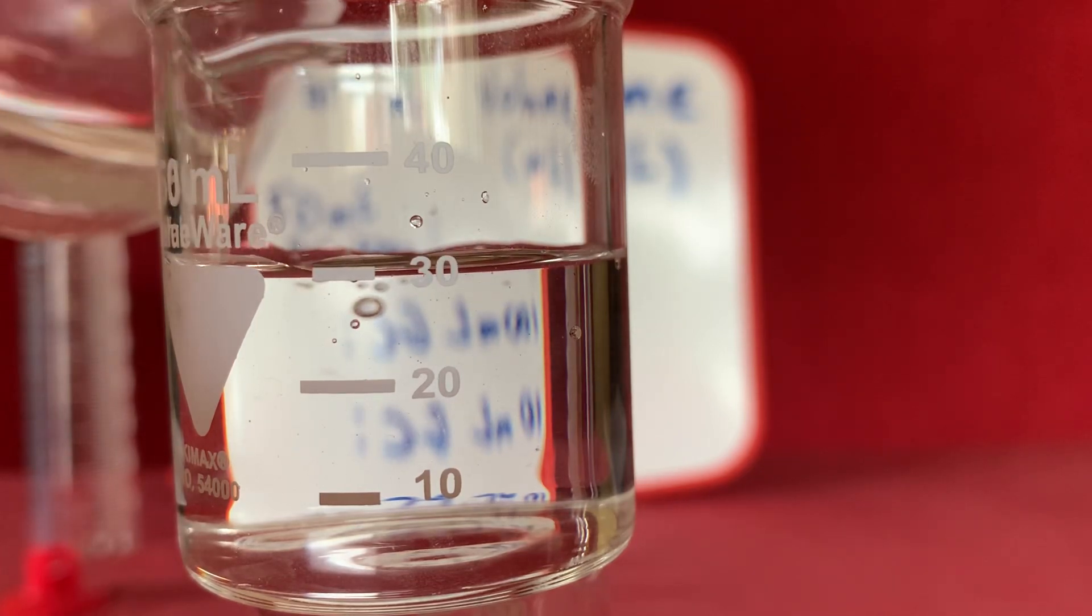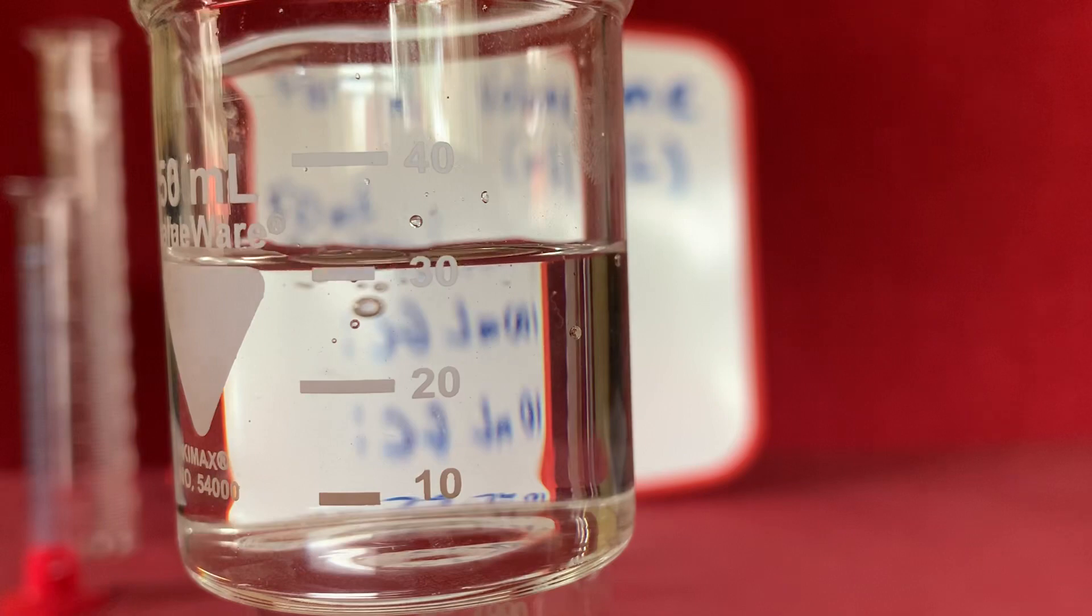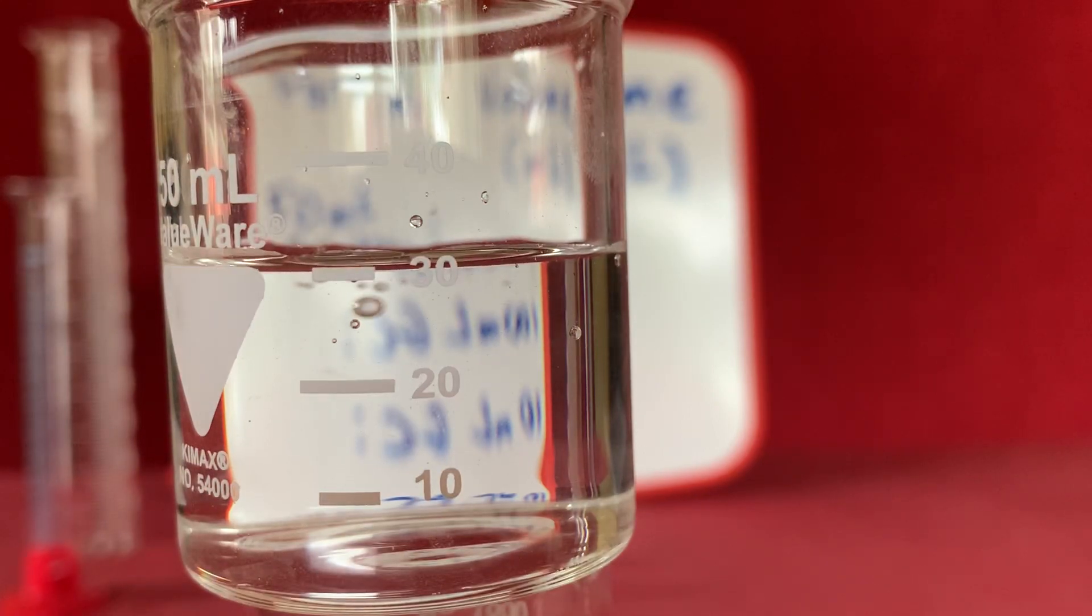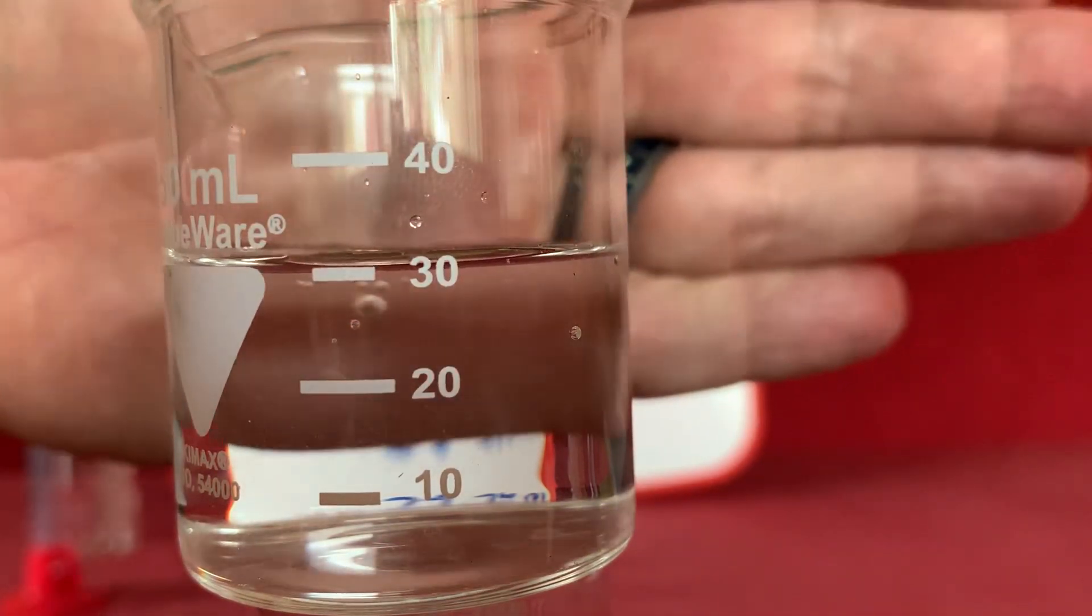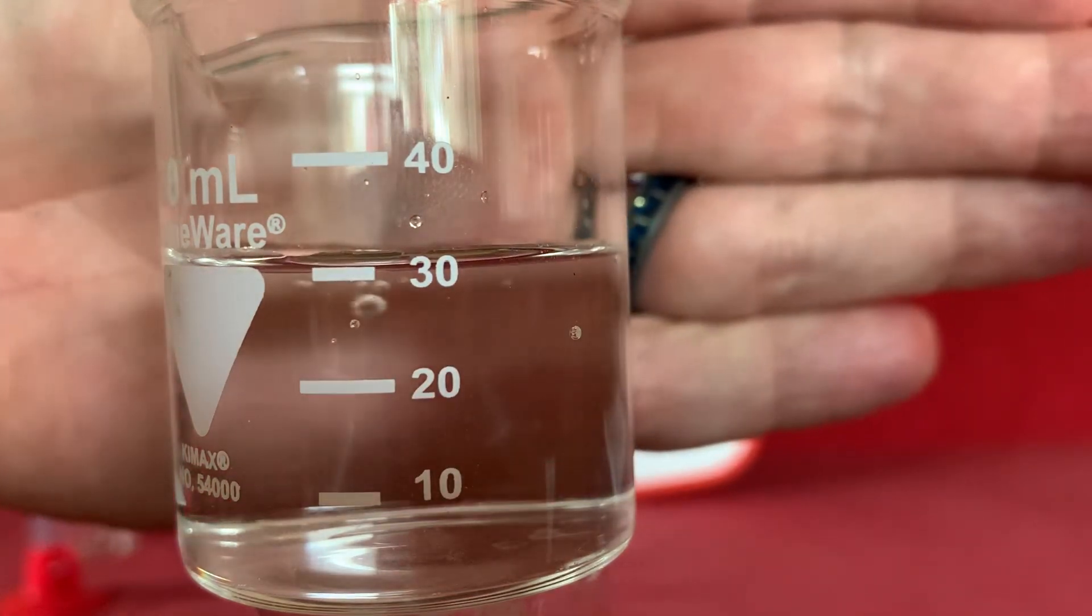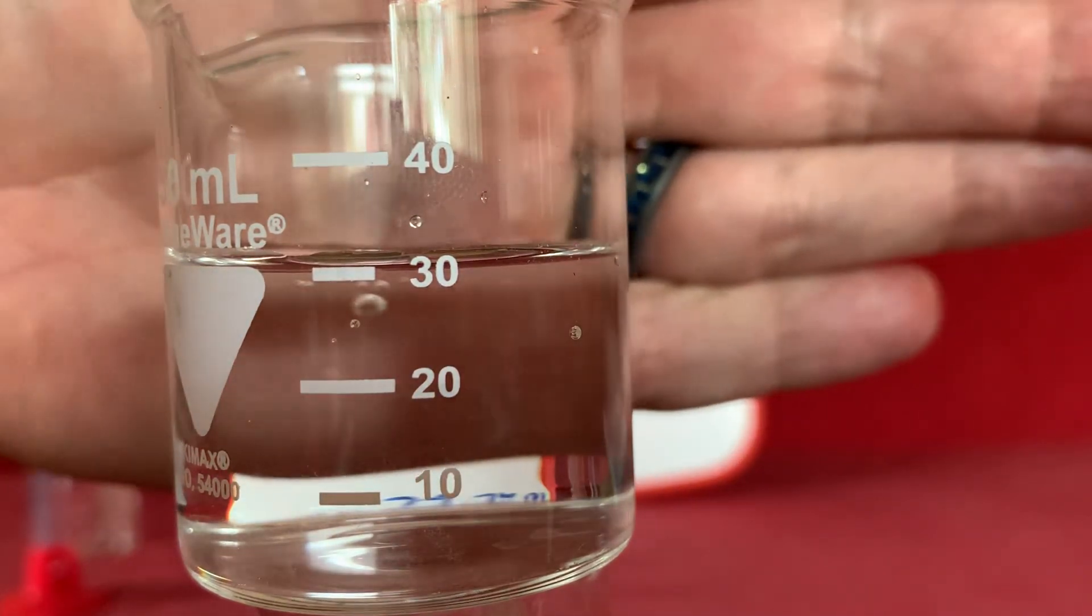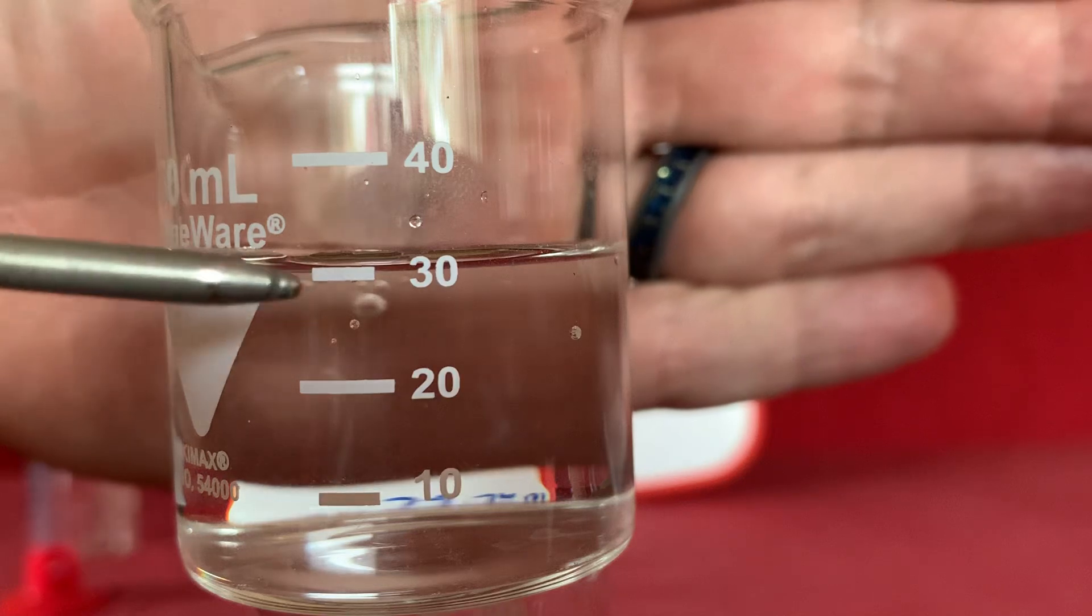Whenever you measure volume it's important to look at the bottom of the meniscus. Now in a beaker this is somewhat difficult to see because it's a very broad container. But we can see that the bottom of this line seems to be touching my 30 mark.